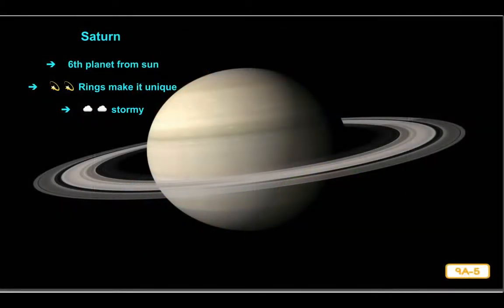The next planet in the solar system is Saturn, the sixth planet from the Sun. It is the second largest planet in the solar system, although it is much smaller than Jupiter. Saturn is famous for its rings — it is not the only planet with rings, but no other planet has rings like Saturn's. Its rings make Saturn unique and easy to recognize. This incredible photo was taken by an unmanned orbiter in 2004.